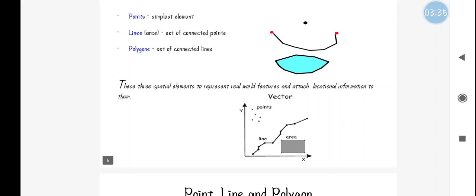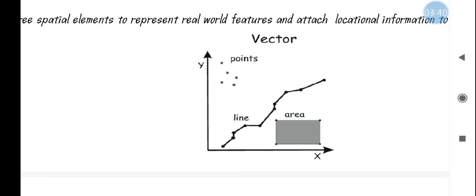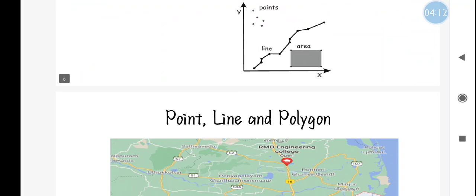In this graph you can see various points available. A line is nothing but the connection of two or more points — a line is a collection of points. A polygon is the collection of lines. One major constraint is that it is going to be a closed surface — if you connect two or more lines together and they form a closed surface, it will be called a polygon or an area.